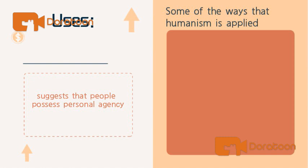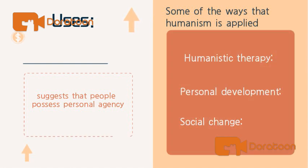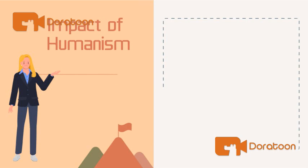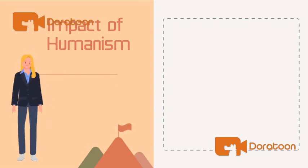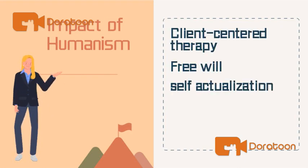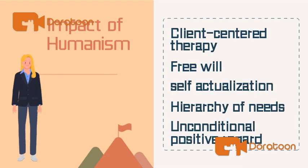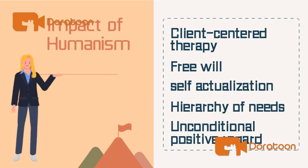Humanism also suggests that people possess personal agency. Some of the ways that humanism is applied within the field of psychology include humanistic therapy, personal development, and social change. Some of the major ideas and concepts that emerged as a result of the humanist movement include client-centered therapy, free will, self-actualization, hierarchy of needs, and unconditional positive regard.